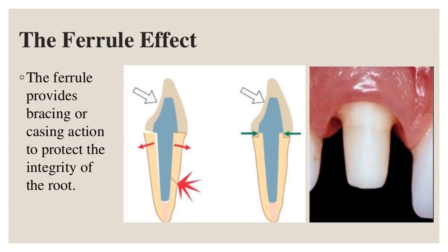The ferrule effect provides a bracing or casing action to protect the integrity of the root.